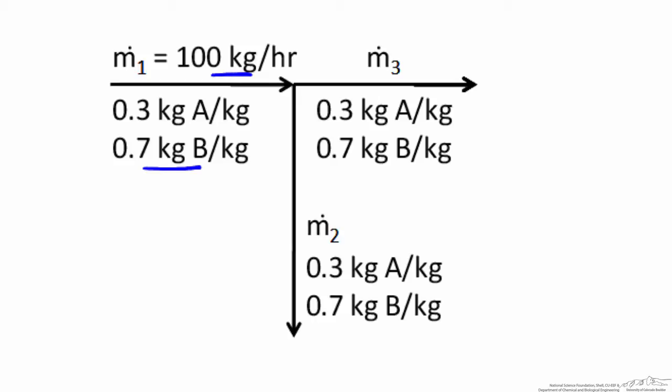If we're just splitting the stream and we're not doing anything to it, then the compositions will not change. The two outputs that we have leaving the split point also have a composition of 30% A and 70% B.